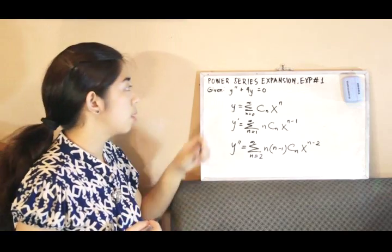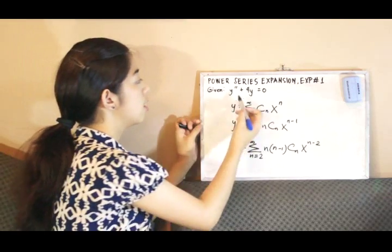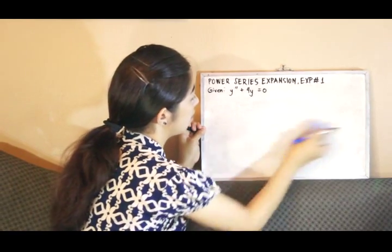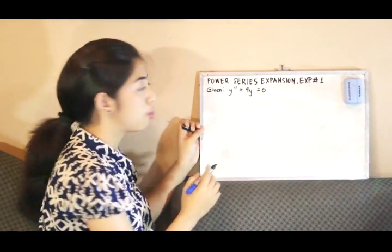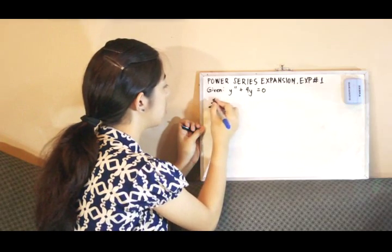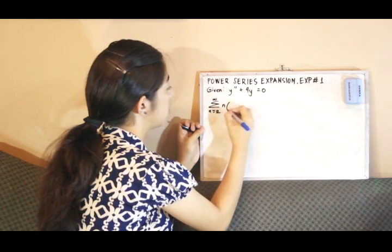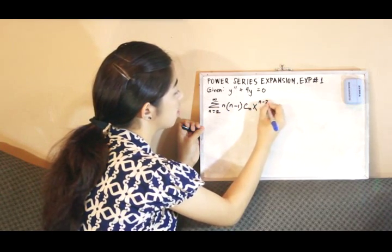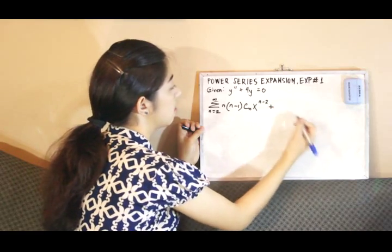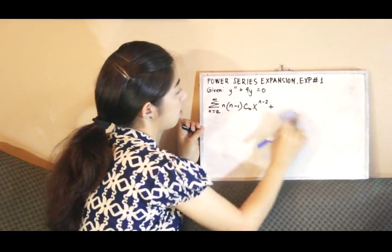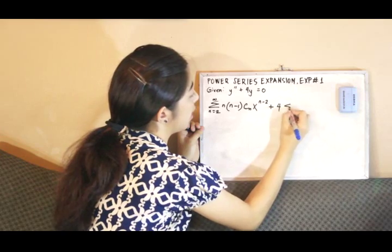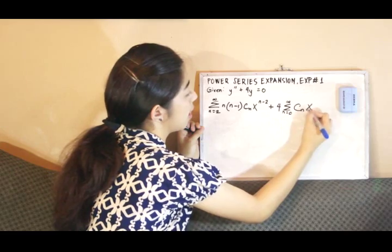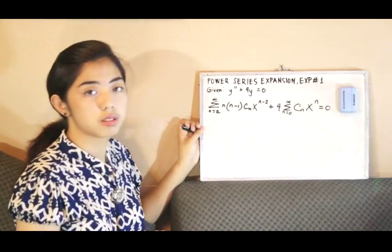Remembering these generic forms of the power series, we can substitute them into the equation. So y double prime is the summation of n(n minus 1) c sub n x raised to n minus 2, plus 4 times the summation of c sub n x raised to n, equals zero.